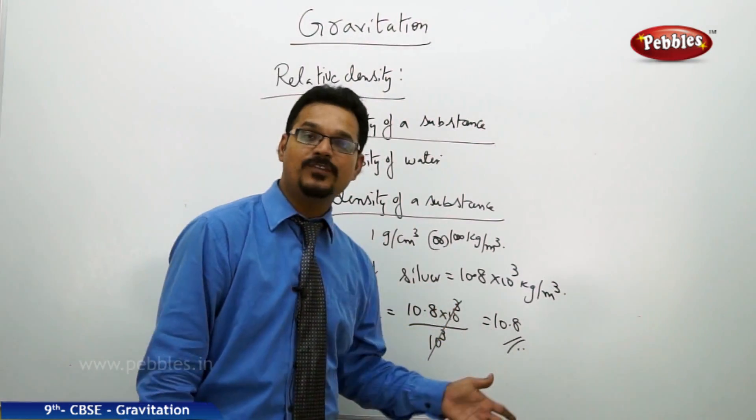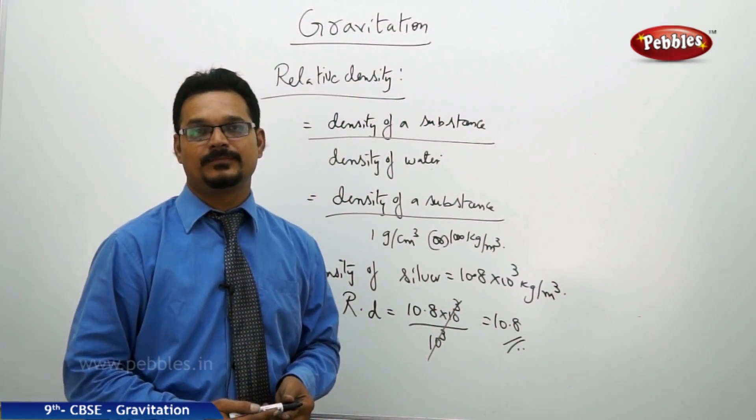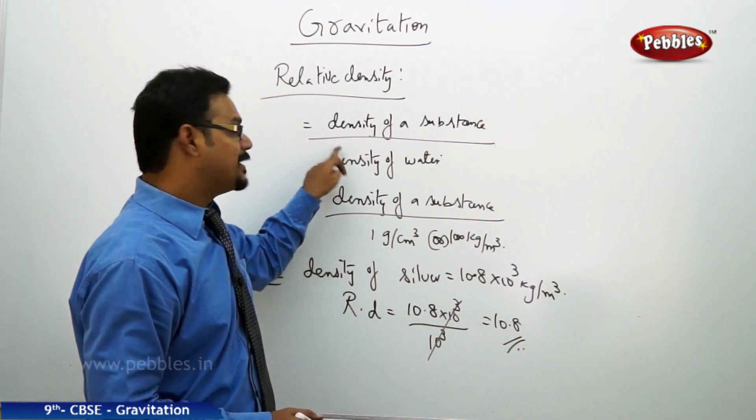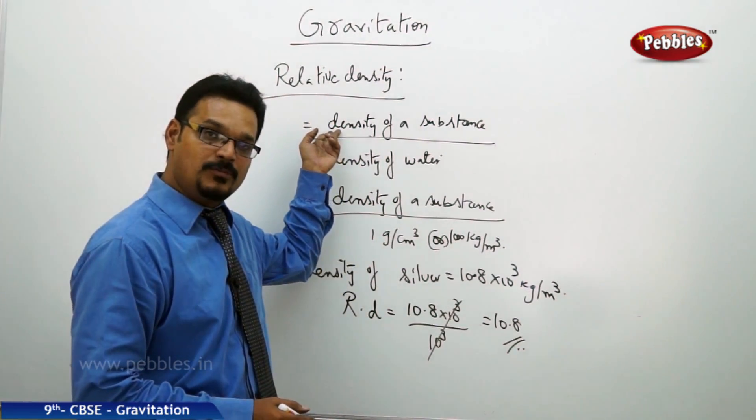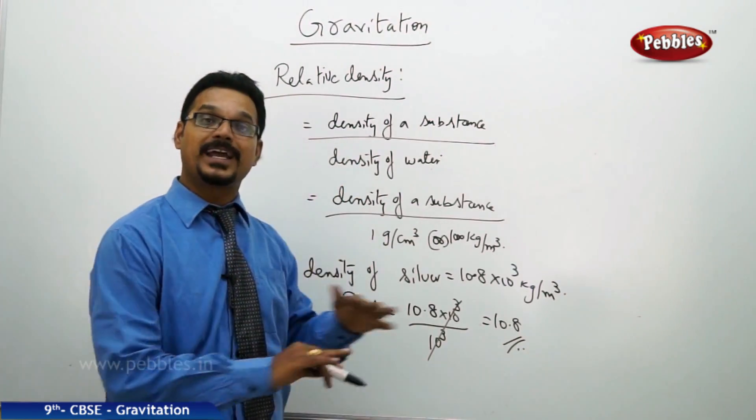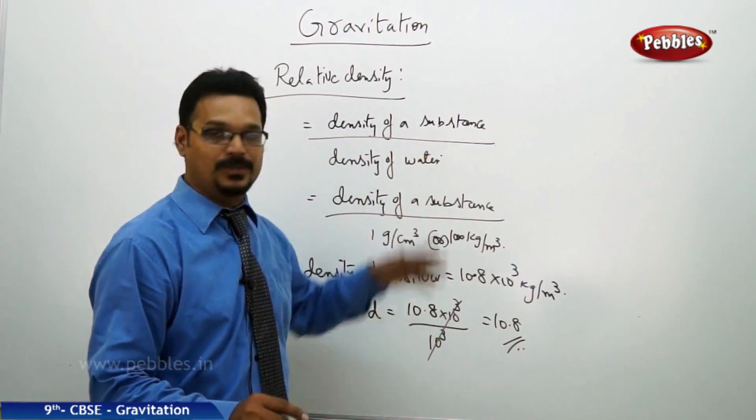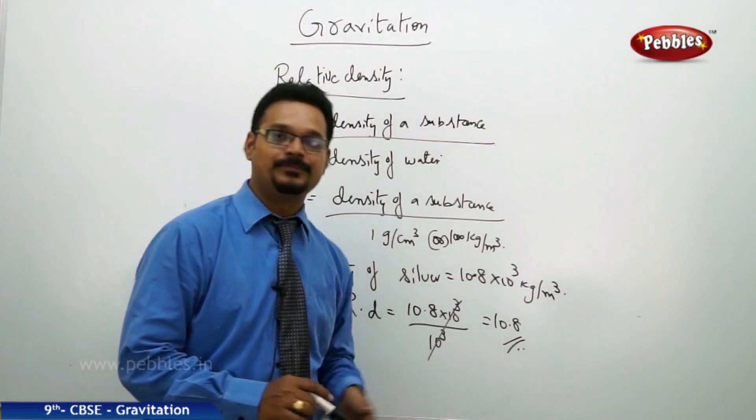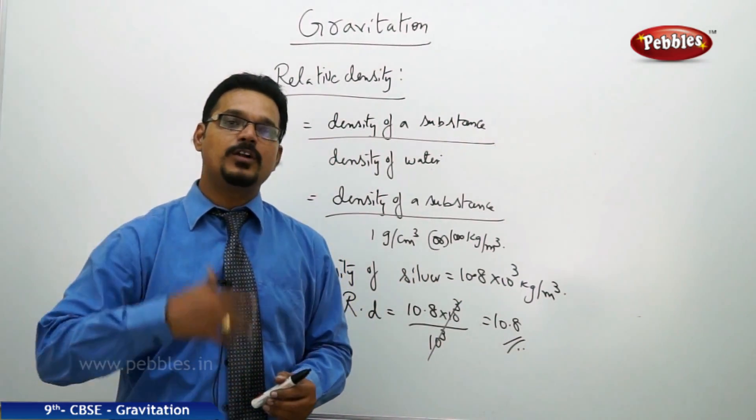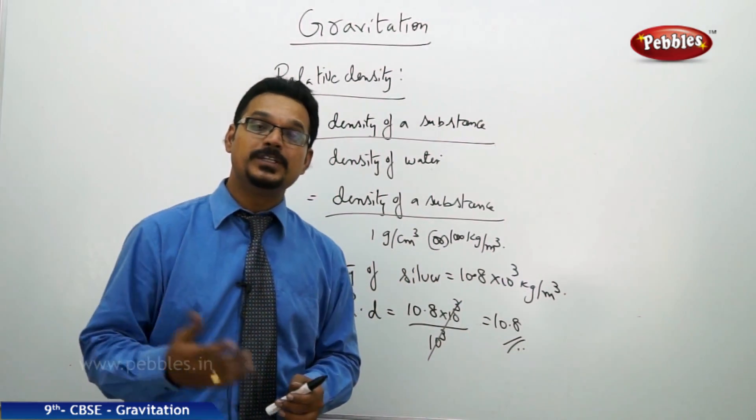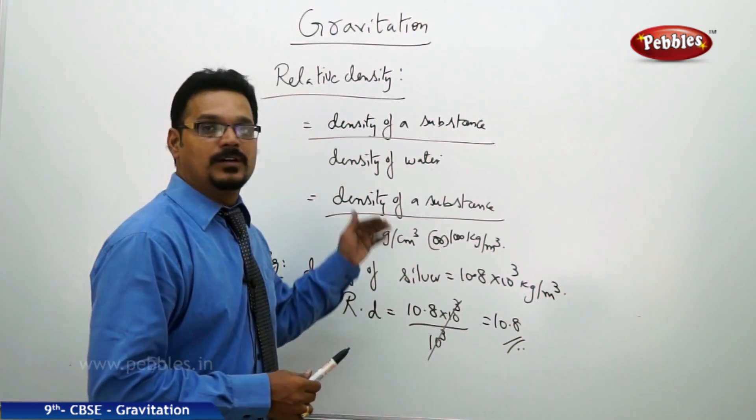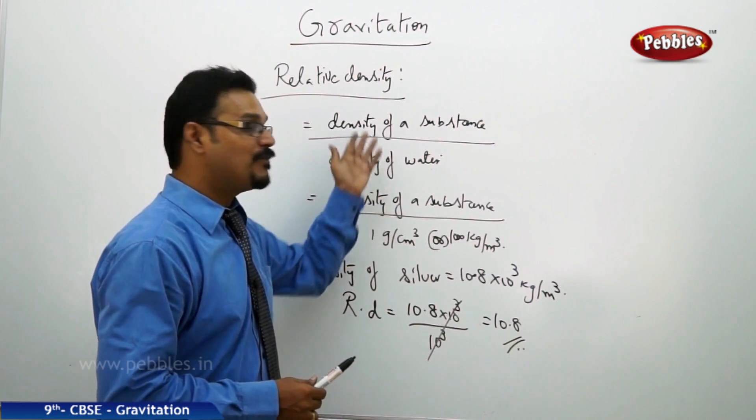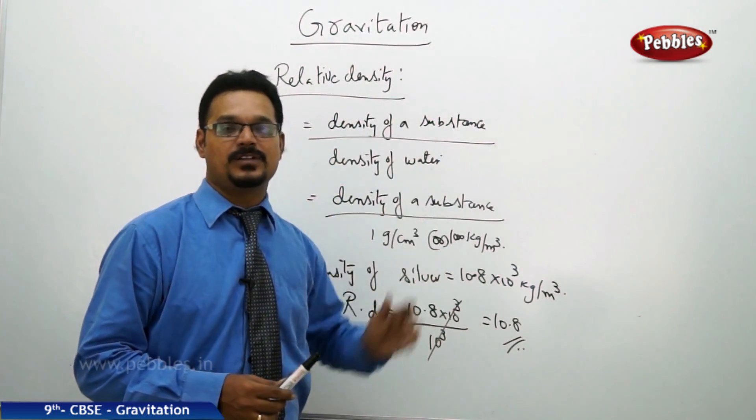Now the question is, what is the unit of relative density? Yes, you see density by density. So gram per centimeter cube divided by gram per centimeter cube, both are cancelled. That means there is no unit, only have the number. So whenever you want to compare, when you want to use the density of different substances, it is a best practice to take the ratio of density of substance to the density of water.